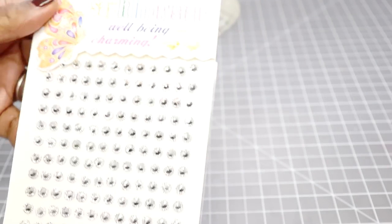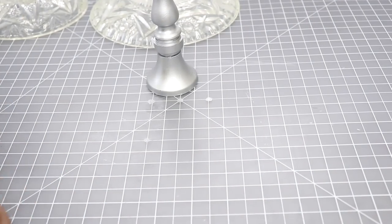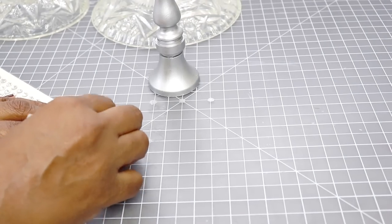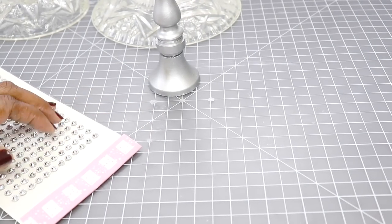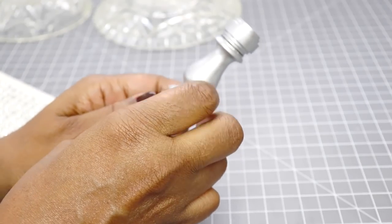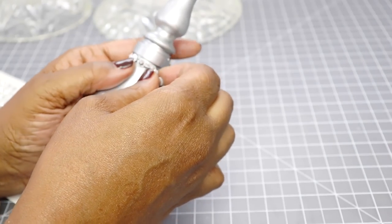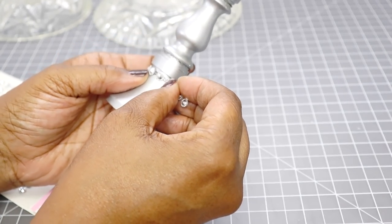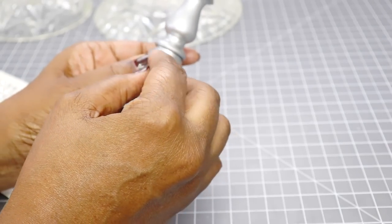So next I'm going to use these silver embellishments. This is by a company called Say It in Crystals and these are self-adhesive and they're really cute. They look like silver diamonds really, and I'm just going to put those in the area where I attach my pieces.